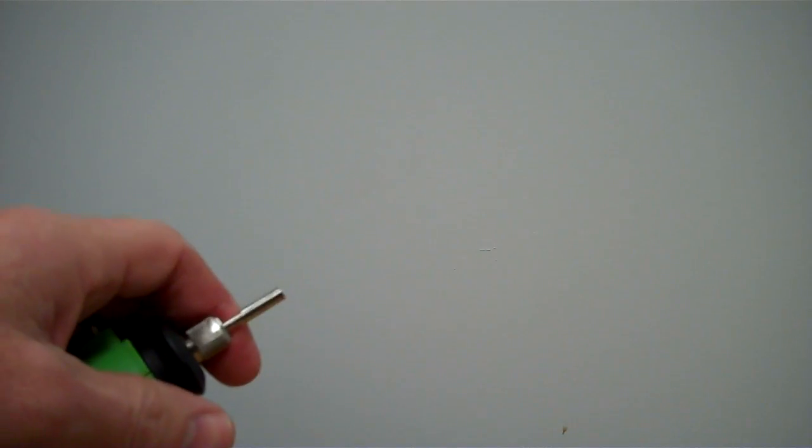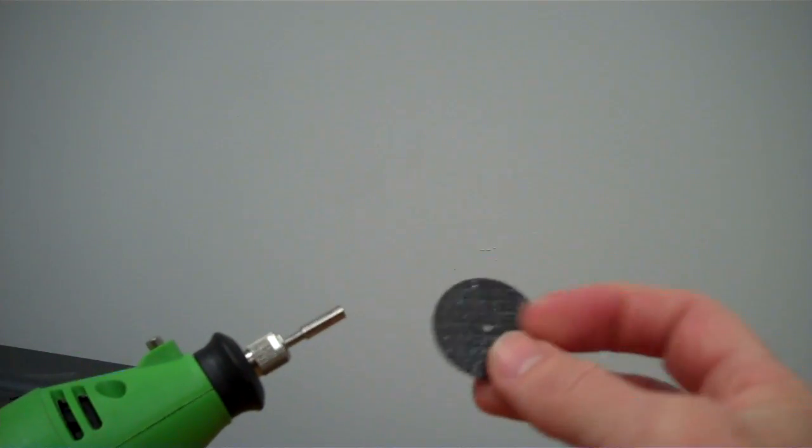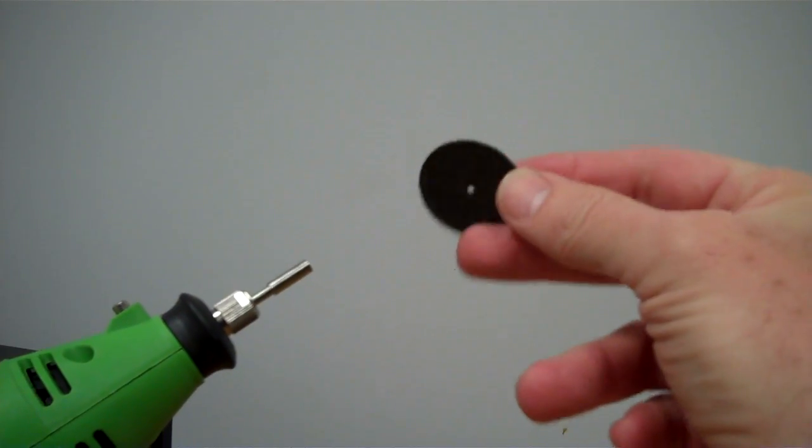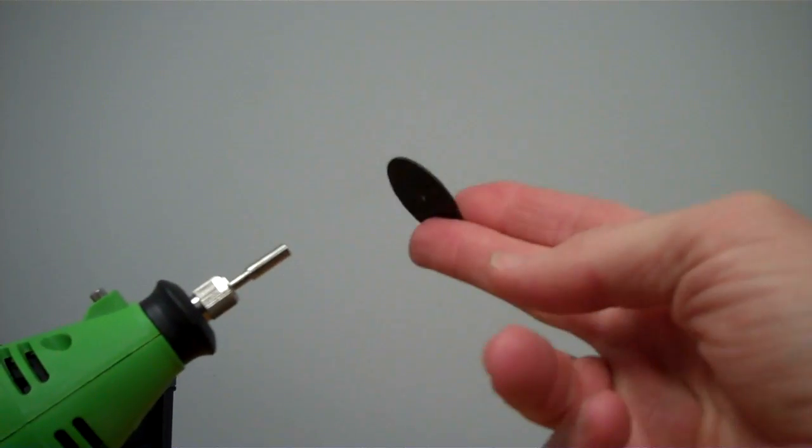I'm going to set that down carefully and then I'm going to take an attachment. Now, this mandrel is used for hard attachments. In this case, we're looking at a cutting wheel, a cutting disc that's used to cut through metal or plastic or ceramic, that kind of thing.